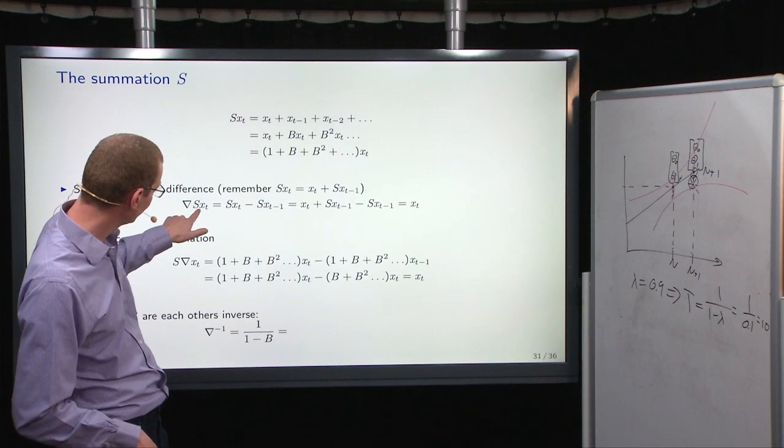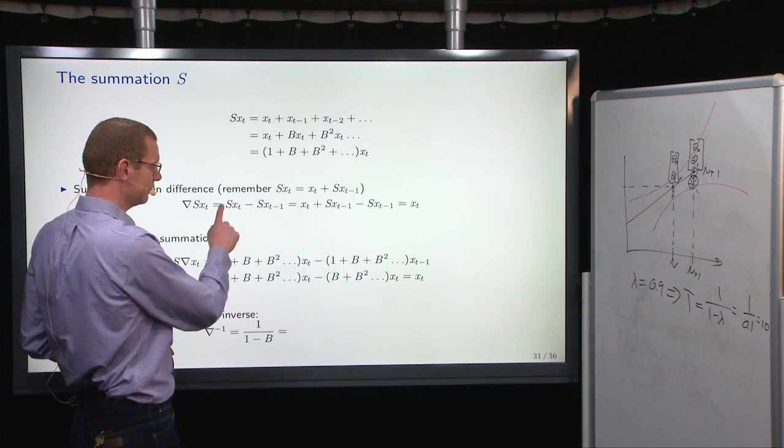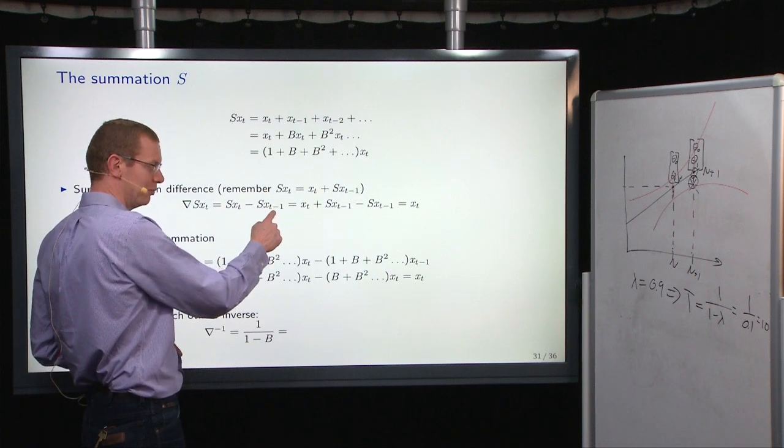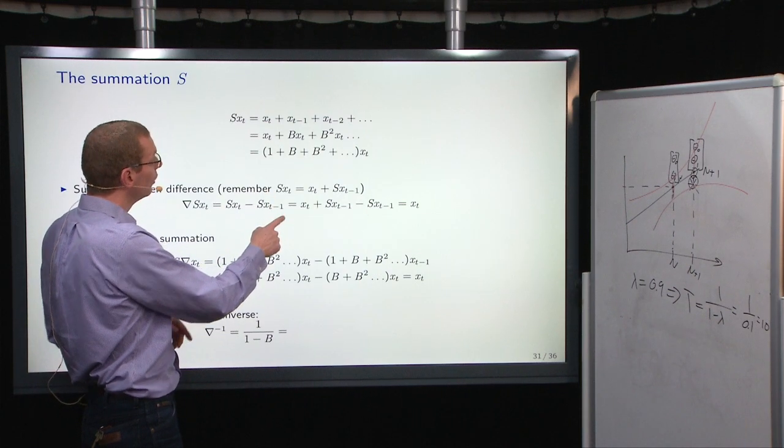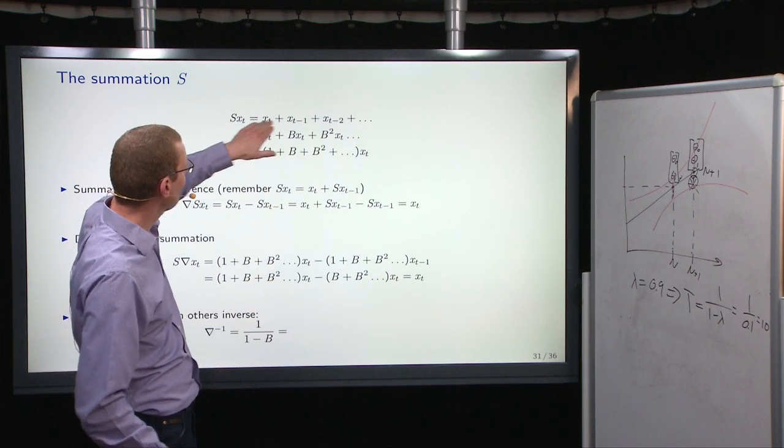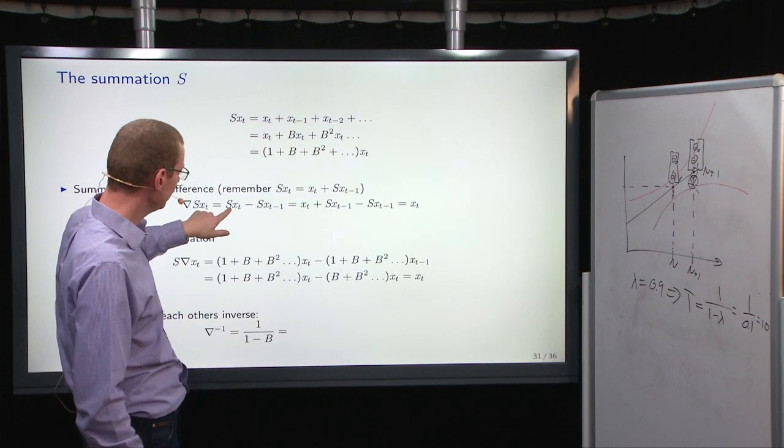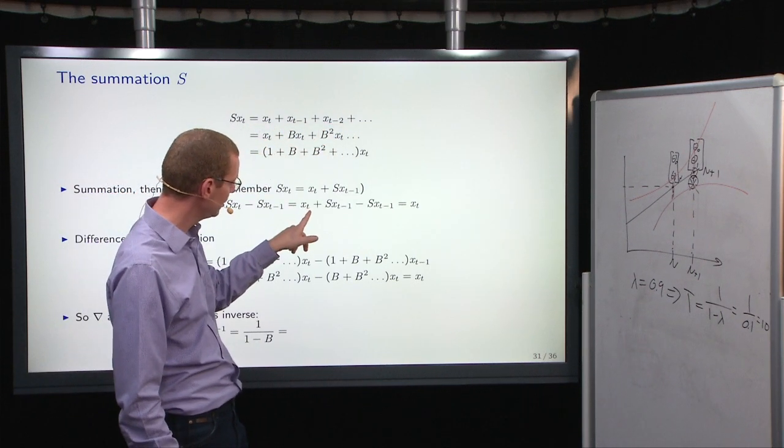Then we do the summation of x_t minus the summation of x_{t-1}. Then we can take the first element out of this up here and say summation of x_t is x_t plus the summation of x_{t-1}.